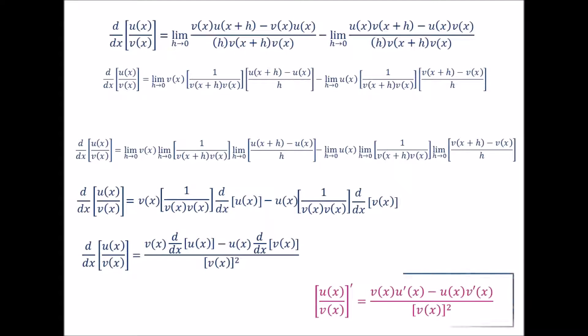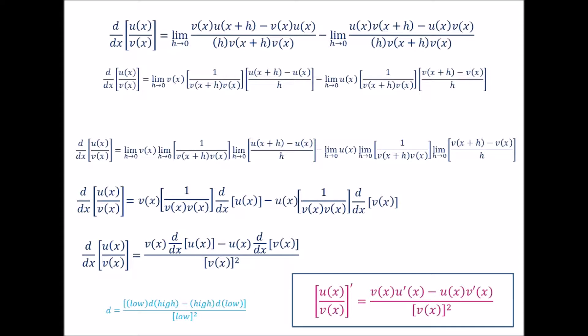And this here is our quotient rule. For those who might have trouble memorizing it, just know that if you let the top function u of x be labeled 'high' and the bottom function v of x be labeled 'low,' then the derivative equals low d high minus high d low, all over low squared. I hope that helps out. So there you have it — the derivation for the quotient rule. Stay tuned for part 2, and as always, thanks for watching.